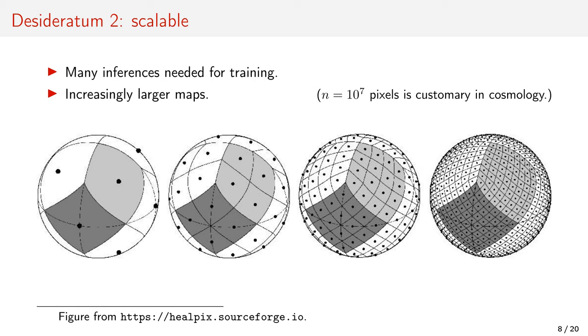The second desideratum is scalability. In cosmological applications, it's common to have maps with multiple millions of pixels.